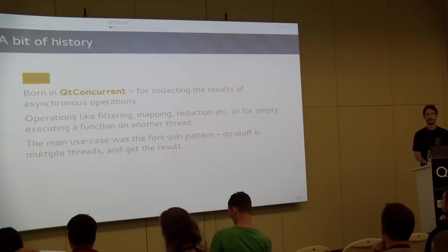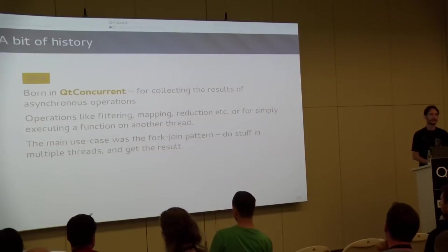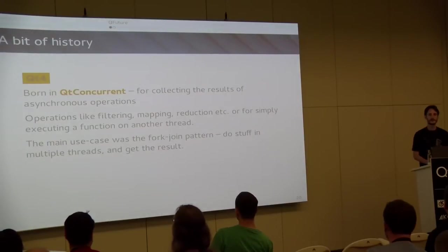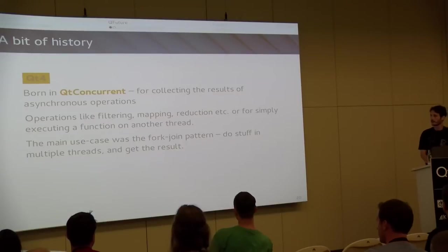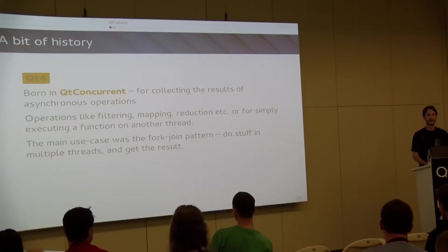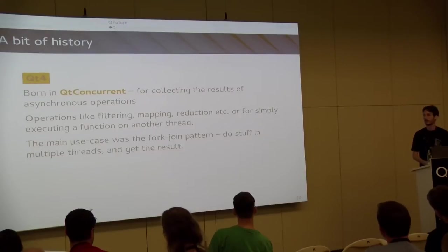QFuture started its life as part of Qt Concurrent. The idea was: if you need to process a large collection of data - for example, sum a huge list of numbers - Qt is helpful enough to spin a few threads, give part of the collection to each thread, each thread calculates its part, and then returns the final value. So you had filtering, mapping, map-reduce, and the main use case with the .get method was the fork-join pattern. You fork into a few threads, all threads finish, you join and get the result. And that works really well for Qt Concurrent use cases.